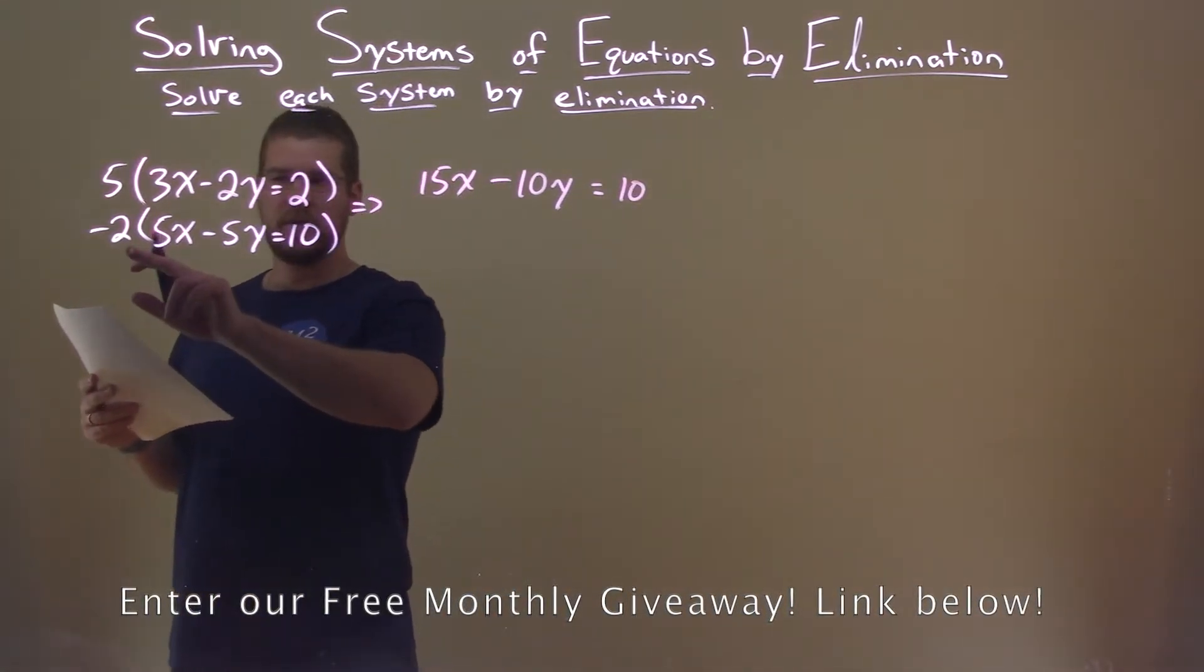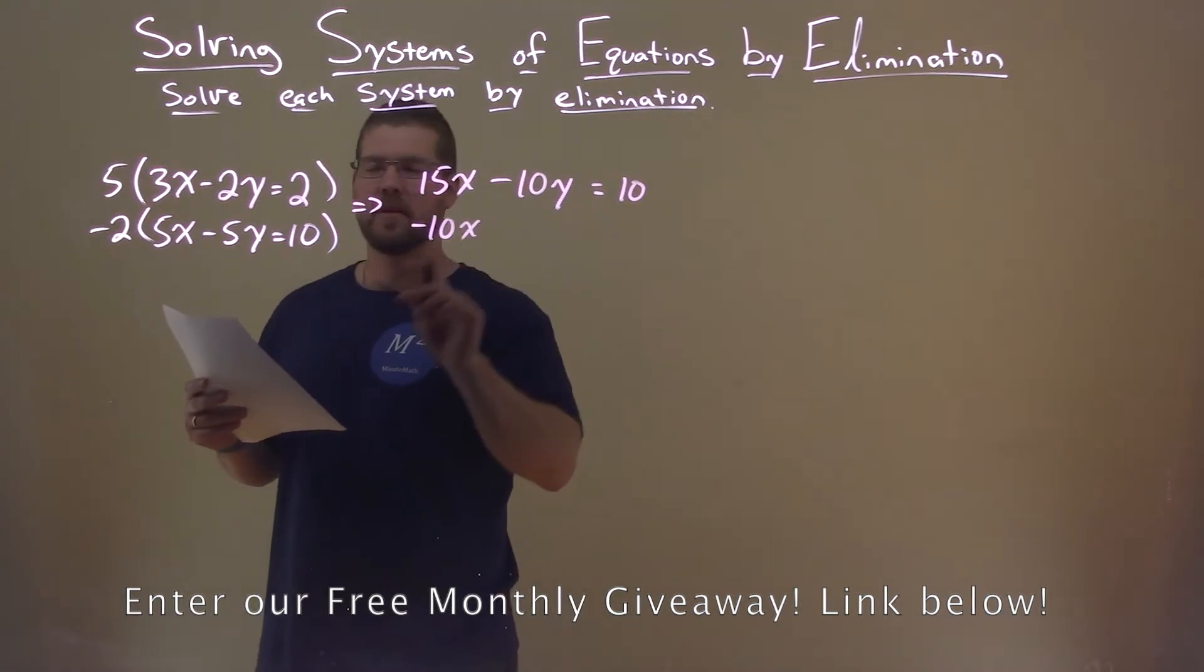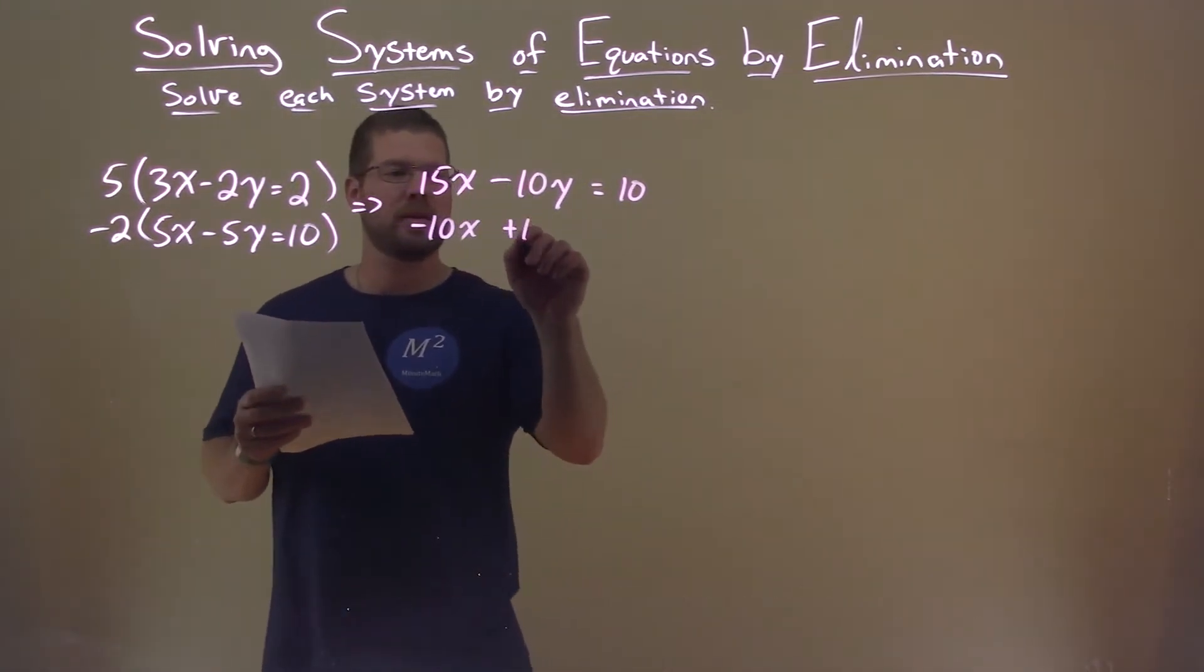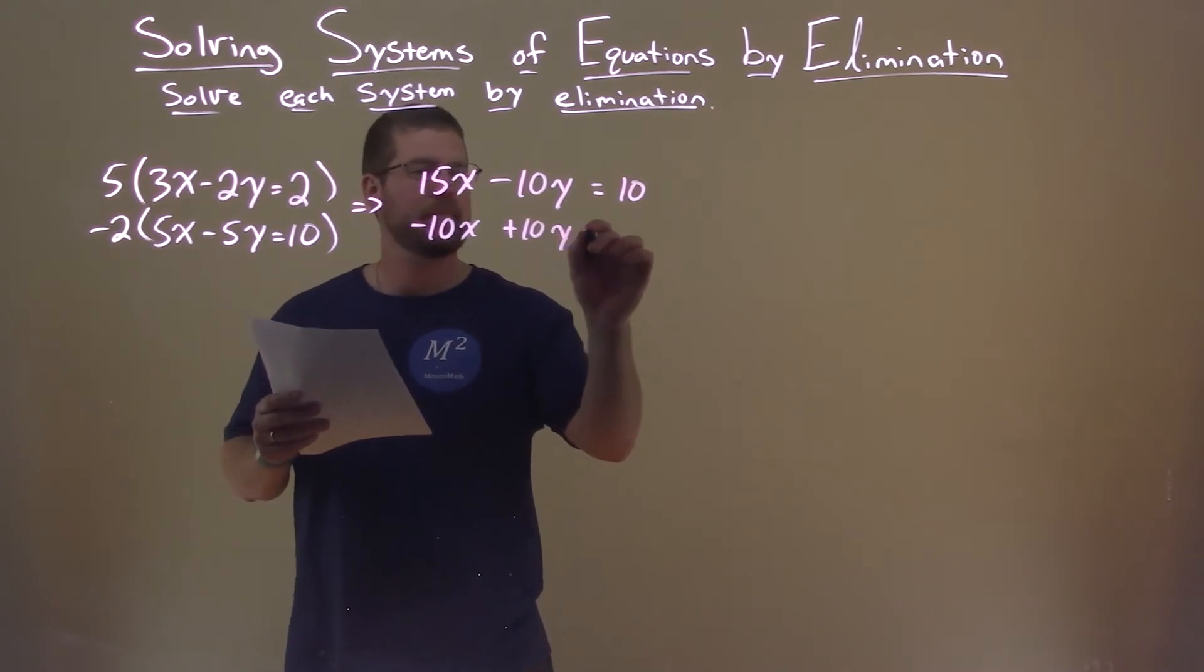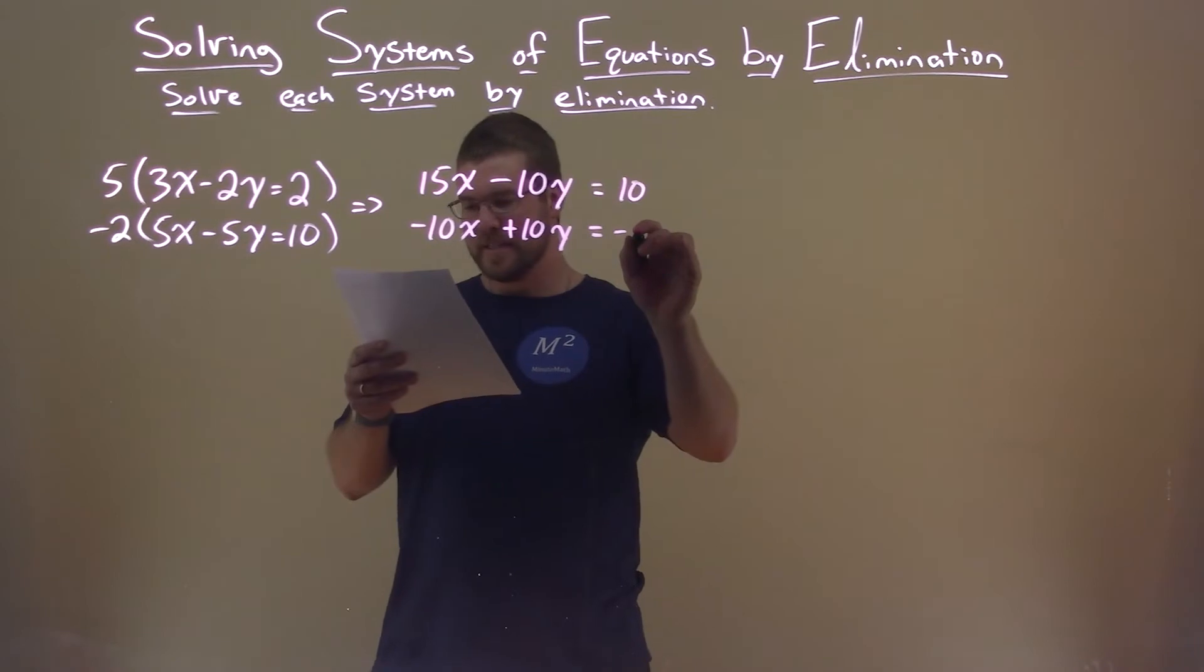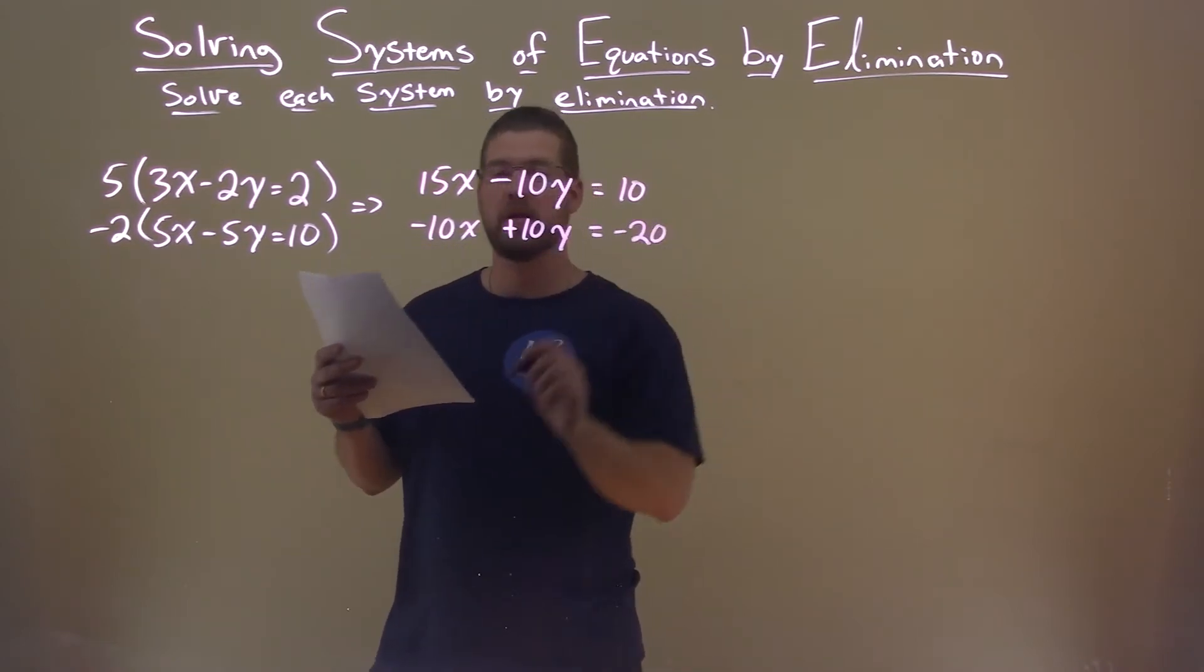Second equation: negative 2 times 5x is negative 10x, and negative 2 times negative 5y is positive 10y. Negative 2 times 10 is negative 20.